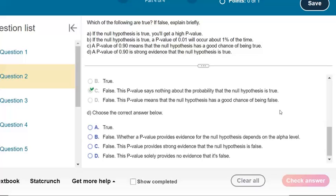Whether a p-value provides evidence for the null hypothesis depends on the alpha level. That is true, but we never have an alpha over 0.5. We would use 0.05. So B is true. Whether a p-value provides... Actually, that's another one of those situations where it should say whether a p-value provides enough evidence depends on the alpha level.